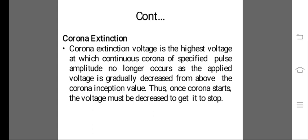Corona Extinction. Corona Extinction voltage is the highest voltage at which continuous corona of specified pulse amplitude no longer occurs, as the applied voltage is gradually decreased from above the corona inception value. Thus, once corona starts, the voltage must be decreased to get it to stop.